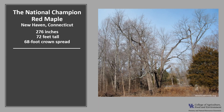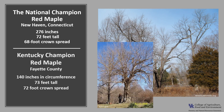The national champion red maple is located in New Haven, Connecticut. It's 276 inches or 23 feet in circumference, 72 feet tall, with a 68-foot crown spread. The Kentucky champion red maple is in Fayette County — 140 inches or almost 12 feet in circumference, 73 feet tall, with a 72-foot crown spread. If you'd like to know more about champion trees, check out the American Forests Champion Tree National Register or the Kentucky Division of Forestry Champion Trees.